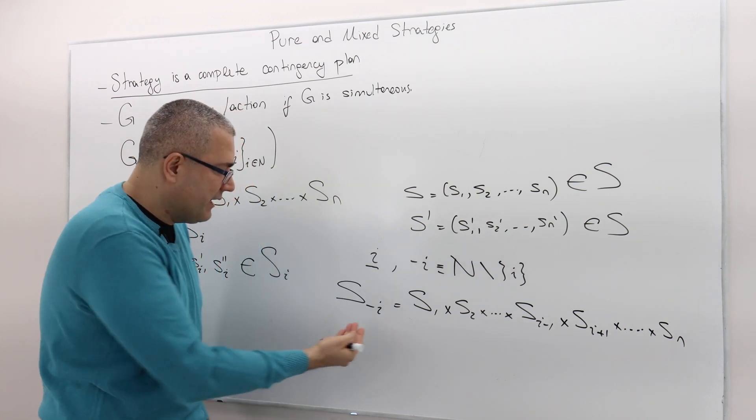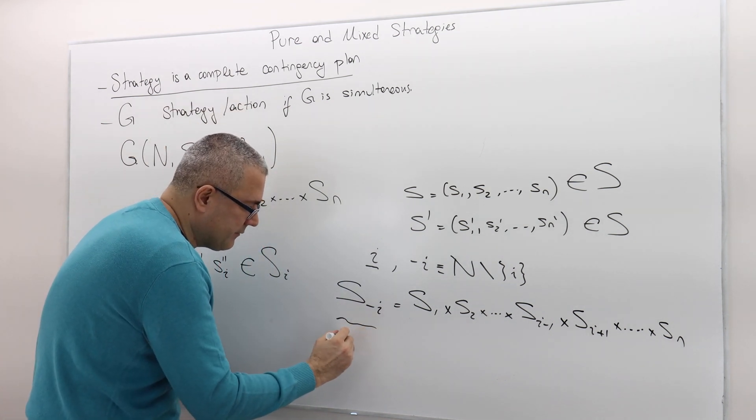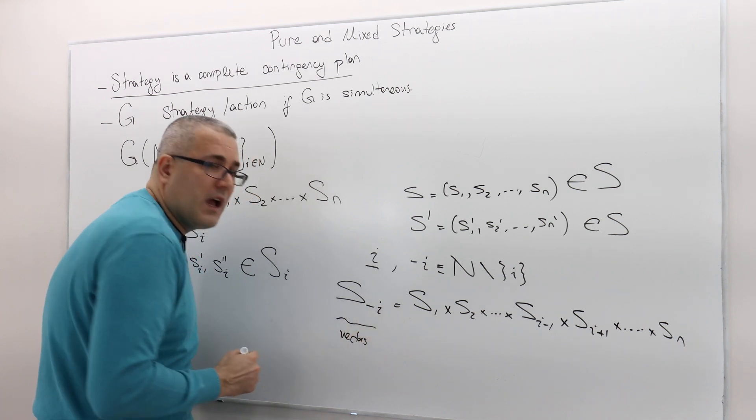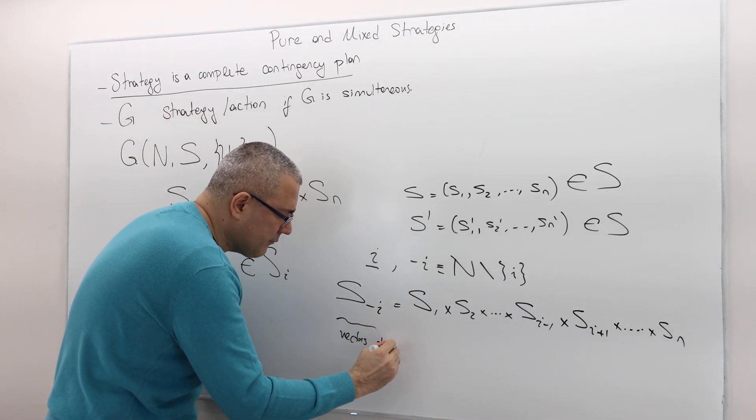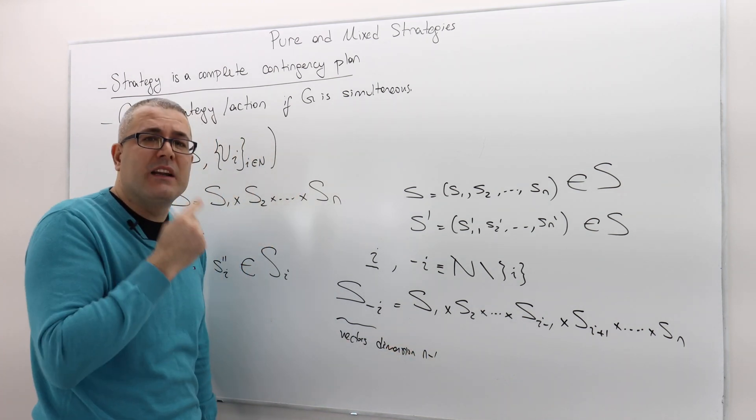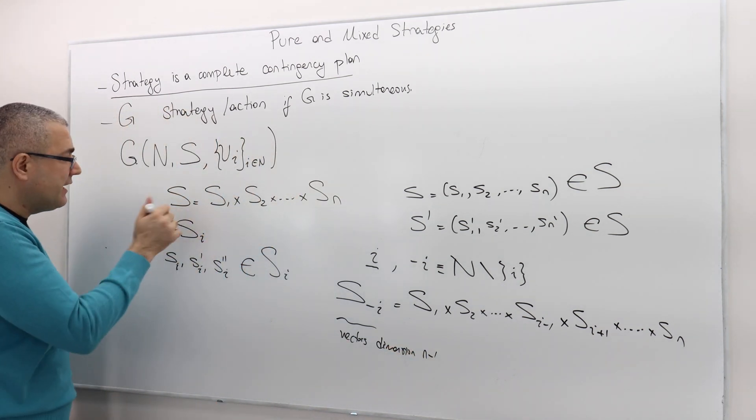Once again, this is a vector, a set of vectors with a dimension N minus 1 because player I is excluded.